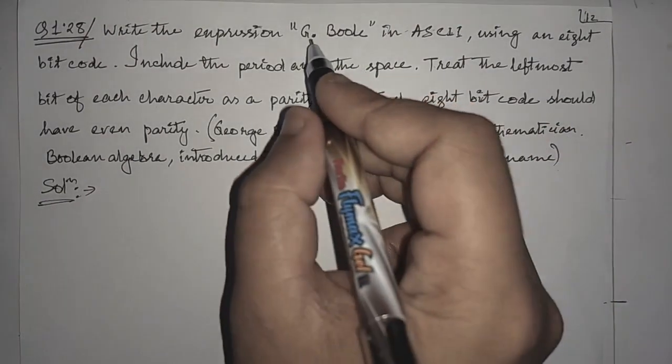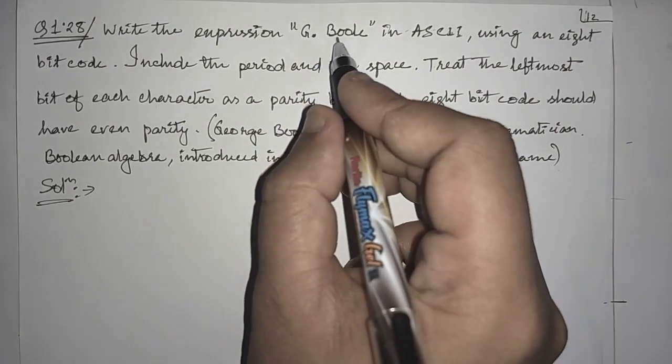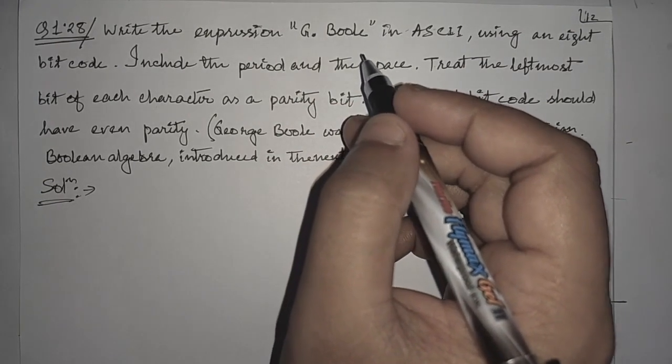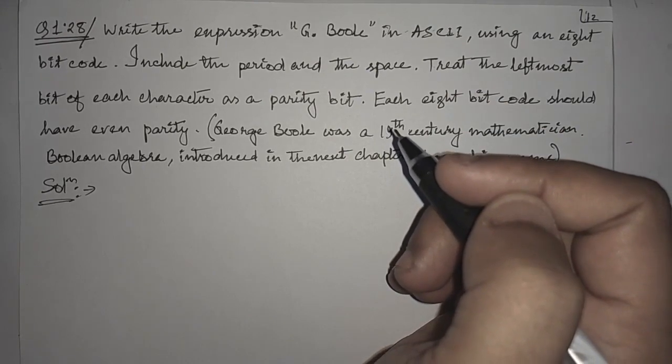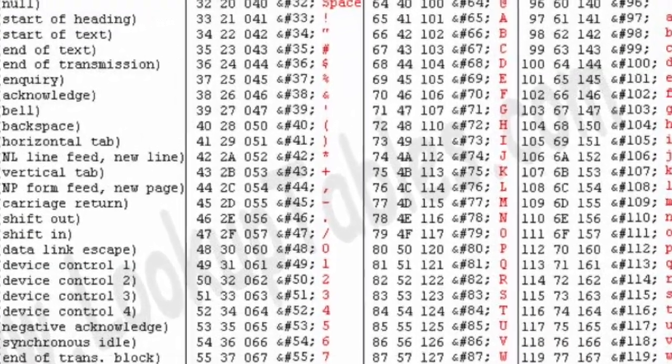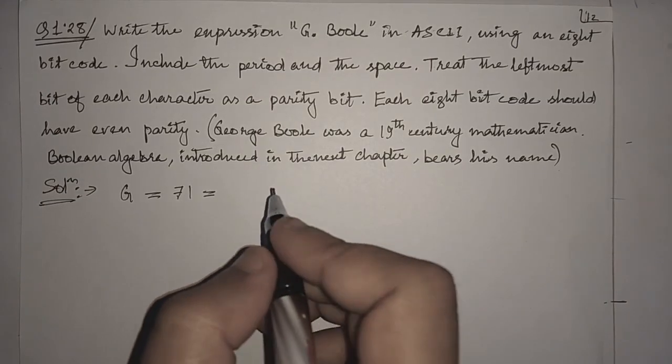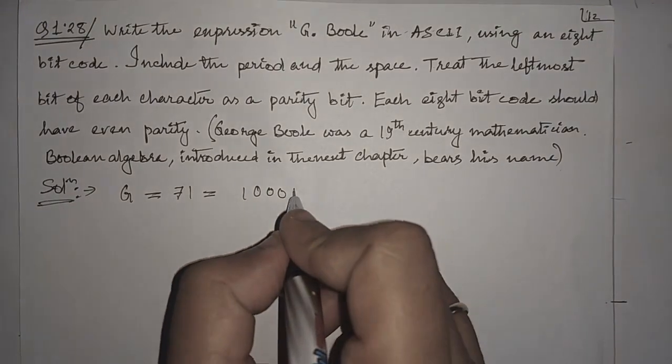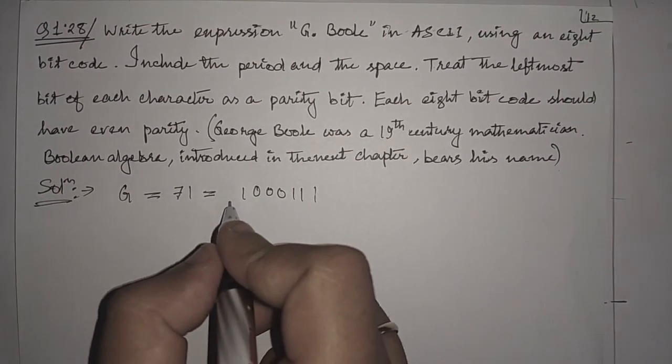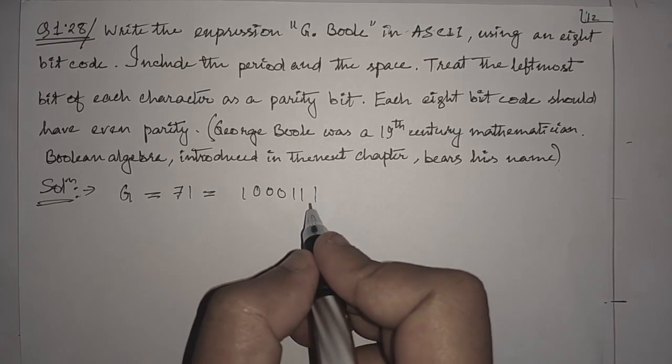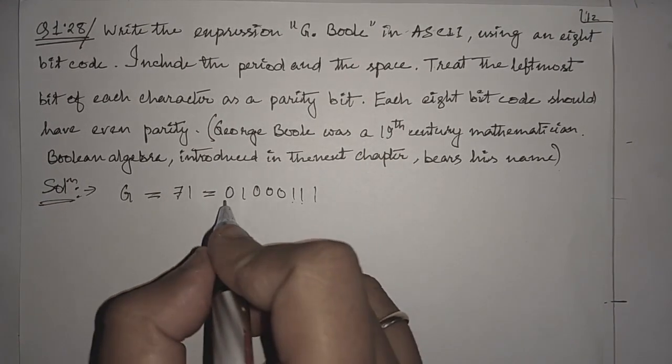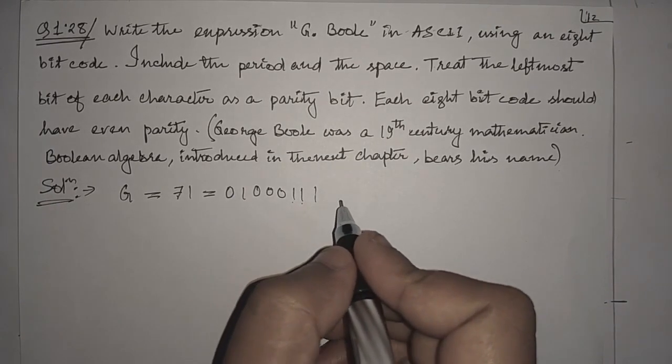There is a standard table from which we have to find the equivalent decimal number for these characters and convert them into 8-bit code. Among the 8 bits, 7 will represent the magnitude and the most significant bit will represent the parity. Let's start with G. From the ASCII conversion table, G equals 71 in decimal. 71 in binary is 1000111. This is a 7-bit ASCII code. We have to add an extra bit for even parity. Here the number of ones are 1, 2, 3, 4. So we have to write 0 here. If we have odd number of ones, we write 1. If even number of ones, we write 0.